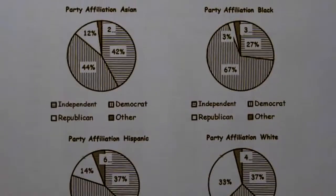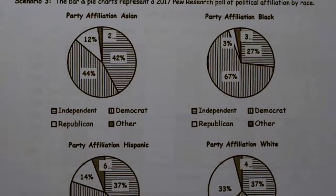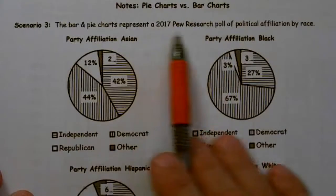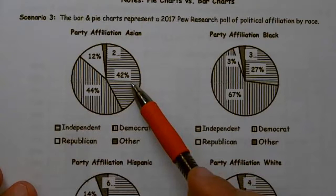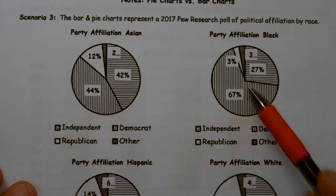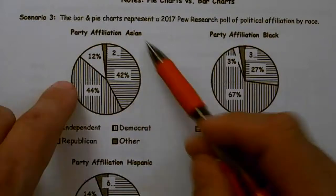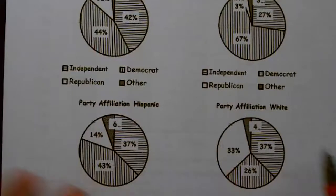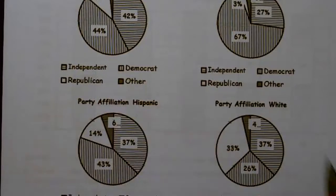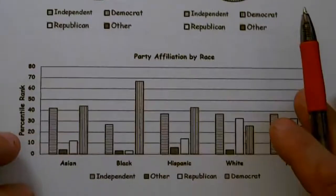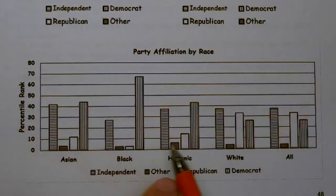So, looking at a pie chart: in this particular setup, we represent a 2017 Pew Research poll on political affiliation by race. We see that 44% are Democrat, 42% are Independent, and we have each race broken out — Asian, Black, Hispanic, and White. This is the party political affiliation by race, and when we say Independent, we mean the independent party or not associated. Notice in the bar chart below that the bars are not touching, and we have the exact same information as in the pie chart above.